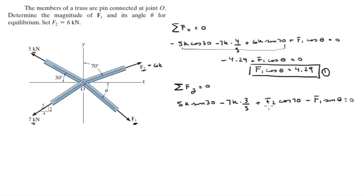You know that F2, I forgot we're given the value of F2, F2 is equal to 6k.